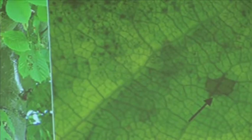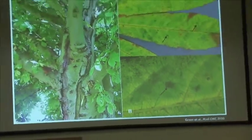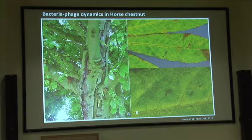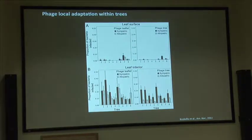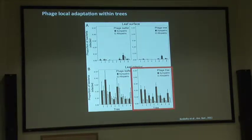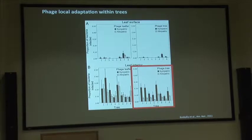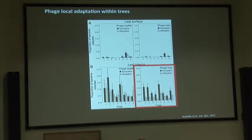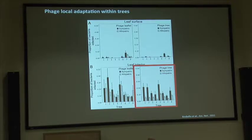Some people have started to look at this. One researcher in particular, Britt Coskella, who was recently in the UK but has now moved to Berkeley, has looked at bacteriophage dynamics within the horse chestnut phylosphere. Some of the interesting findings she has come across is that there's local adaptation—so isolating bacteriophage from a particular tree, they're going to be more likely to infect bacteria isolated from that same tree than bacteria isolated from a separate tree.